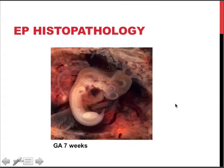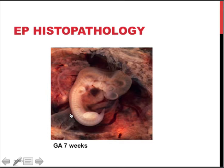Here is the pathology of an ectopic pregnancy — a case of a viable ectopic pregnancy where the embryo is visible, with the endosalpinx of the fallopian tube visible in the background.